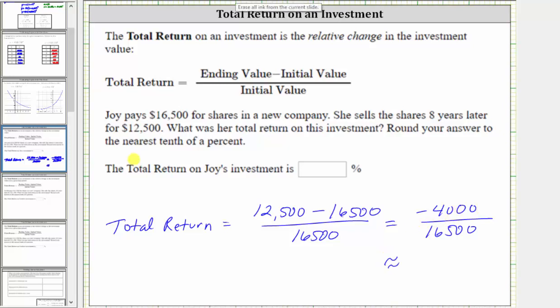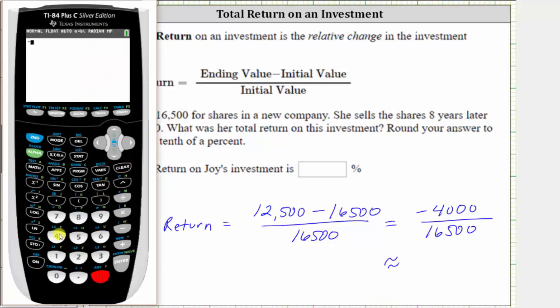Because we're told to round the decimal to the tenths place value or one decimal place, we'll have to round the decimal to three decimal places. We have negative 4,000 divided by 16,500. So notice how there's a four in the fourth decimal place, which means the three decimal places, this is approximately negative 0.242.